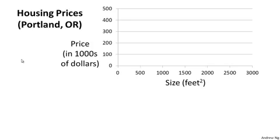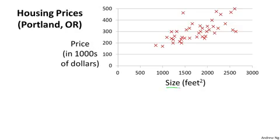Let's use our motivating example of predicting housing prices. We're going to use a dataset of housing prices from the city of Portland, Oregon. Here I'm going to plot my dataset of a number of houses that were of different sizes that were sold for a range of different prices. Let's say that given this dataset, you have a friend that's trying to sell a house, and your friend's house is 1,250 square feet. You want to tell them how much they might be able to sell the house for.